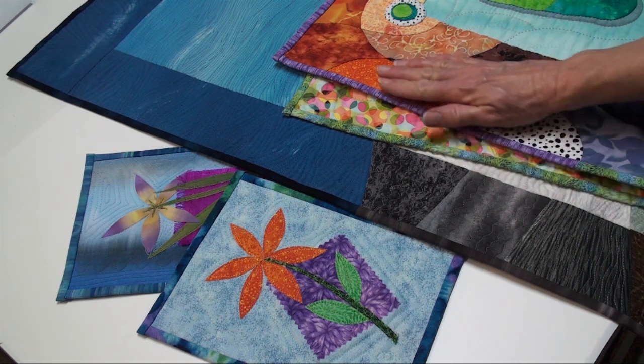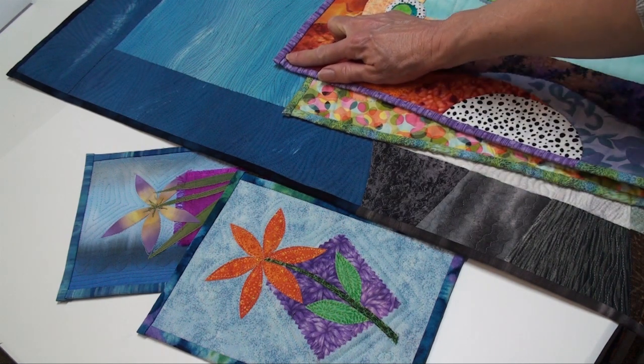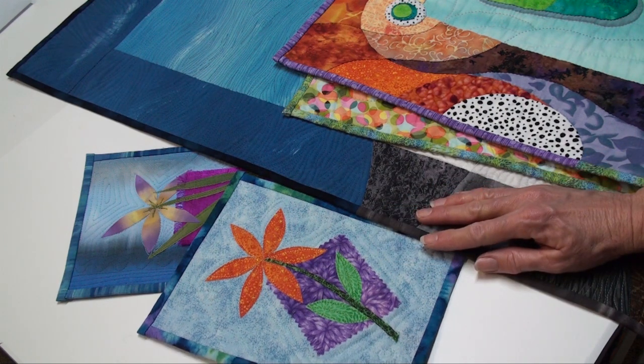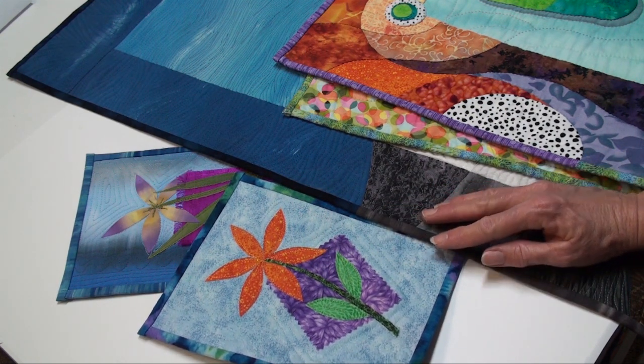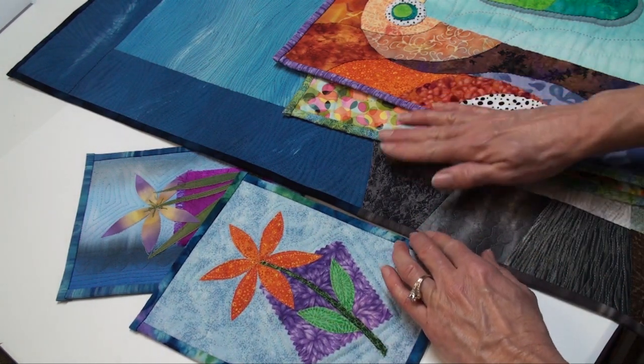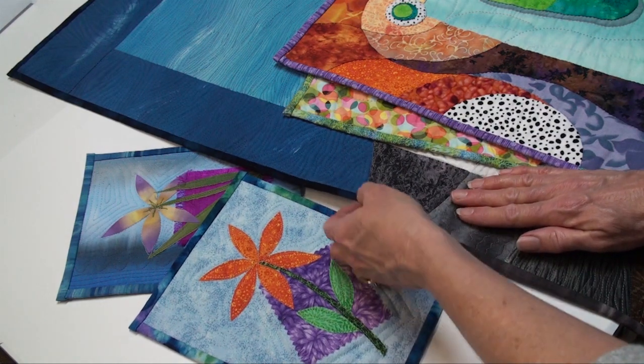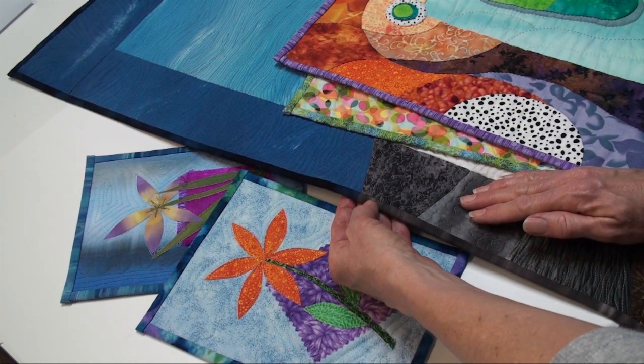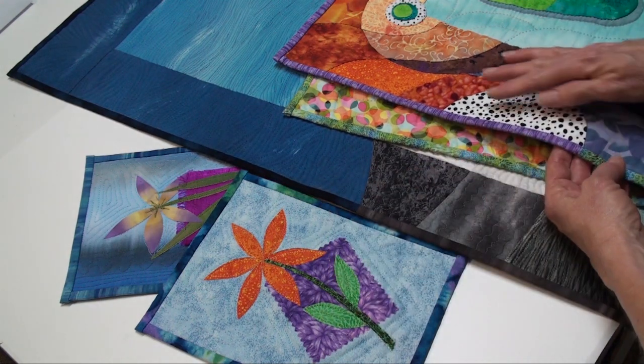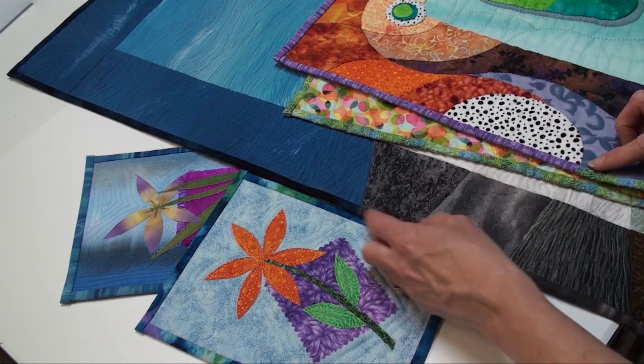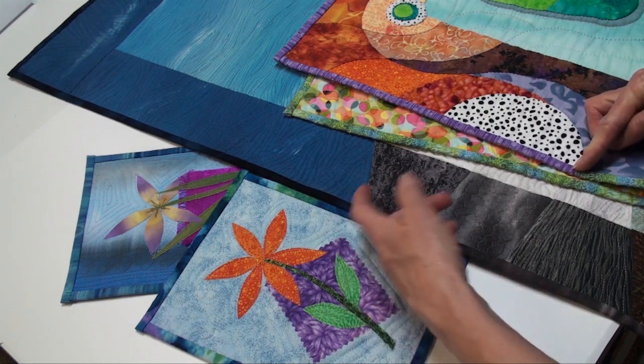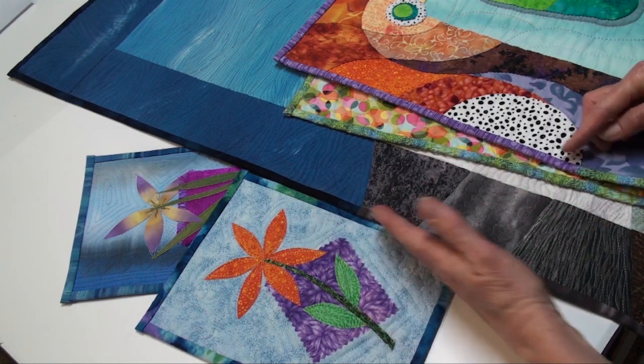Here are some of my quilts that have butted corners. On the small quilts, I'm able to keep the piece straight, square, and nicely framed with butted corners. On pieced quilts, where I'd like the pattern of the quilt design to come out into the binding, I'm able to do that, as in these two examples. The pattern comes out into the binding. With butted corners, I can get that placed exactly where I want it and keep the quilt nice and straight and flat.